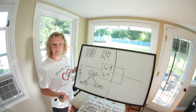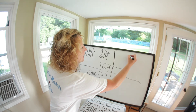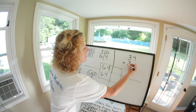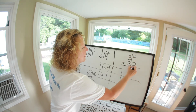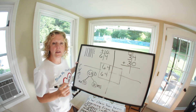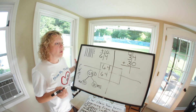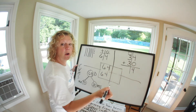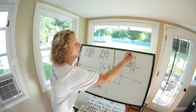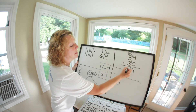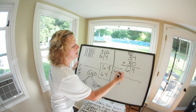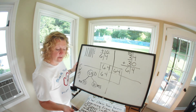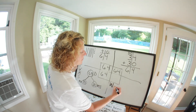Now I'm going to write the number sentence: 34 plus 30. We draw the box and line. We add our ones first: four plus zero is four — there are no tens in four, so we cross off the box. Then we add three plus three, which gives us six. My answer is 64. Answering the question: how many days have we been home altogether?